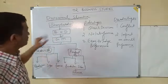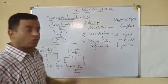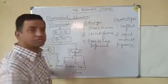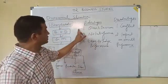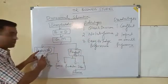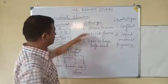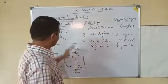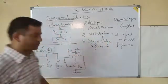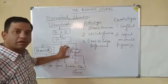Now let's look at the advantages of divisional structure. The very first advantage is quick decision-making. There will be no interference of A in B and B in A, so A will take decisions quickly and B will take decisions quickly. The second advantage is no interference — if Product B wants to make an expansion, there is no need to consult Product A.